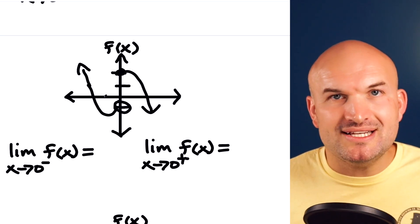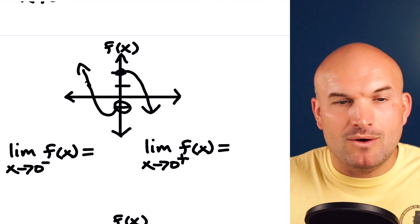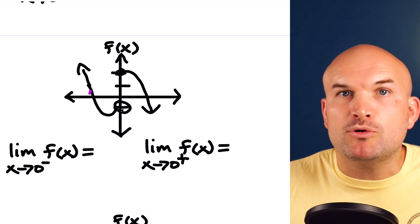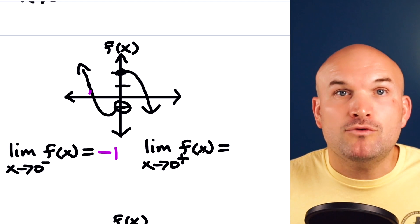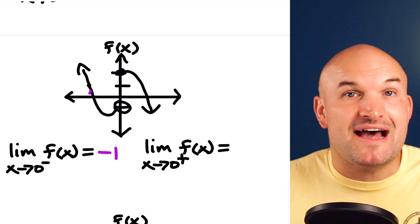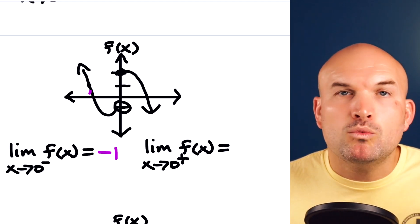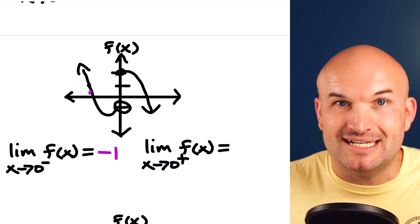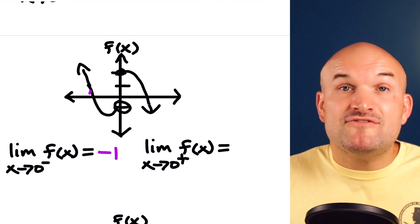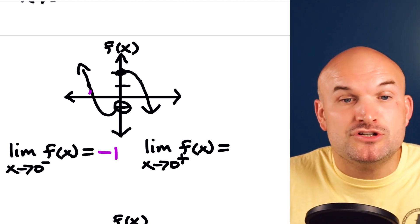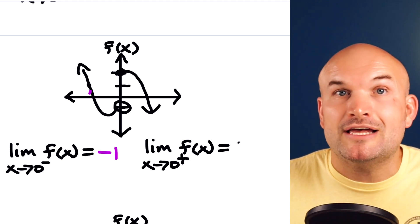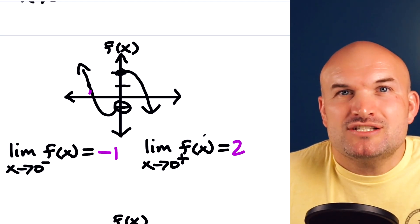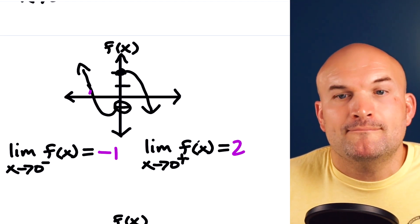In this example, the numbers are starting to change. As my graph is approaching zero from the left, I am approaching the value of negative one — negative one is an undefined value of this function, but it doesn't matter. We're just looking for the value the graph is approaching from the left. Over here, as we follow this graph to the right, we can see that we're approaching the value of two, which is defined. But again, it just matters where we are approaching.